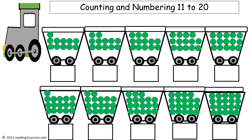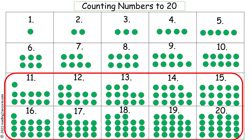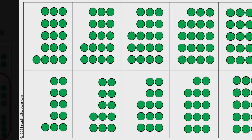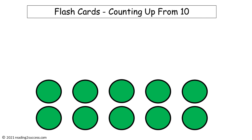Now we want kids to understand the amounts that the numbers 11 to 20 represent. They are to write the correct number for the amount of circles in each of the parts of the train. This is a completed example. If kids need additional support with this activity, review the resource chart with them and practice with them the flashcards counting up from 10.